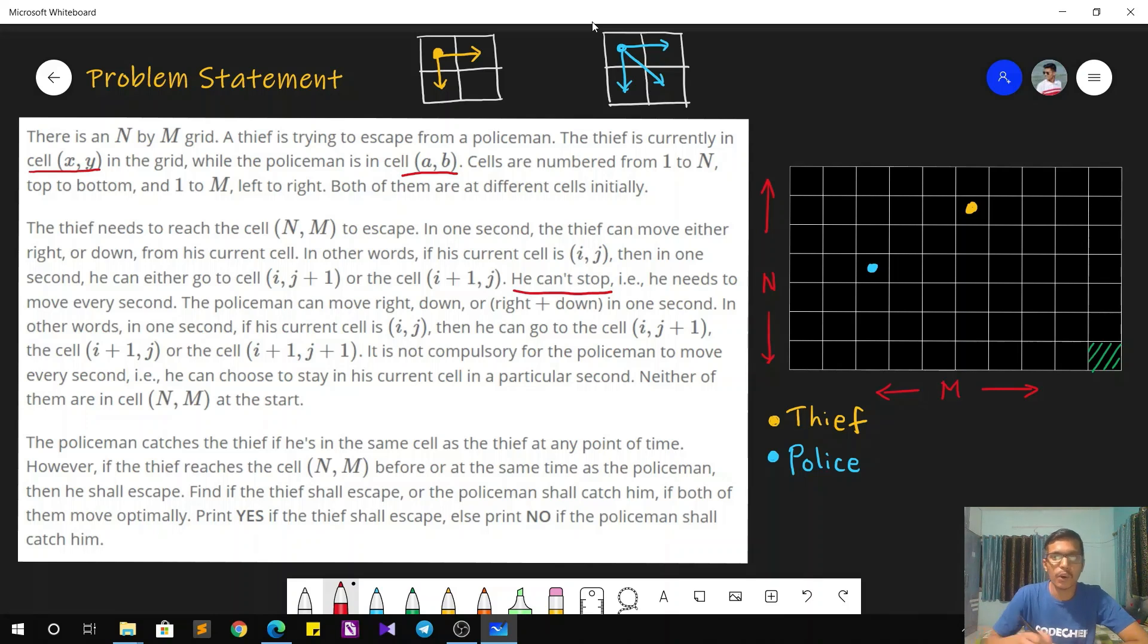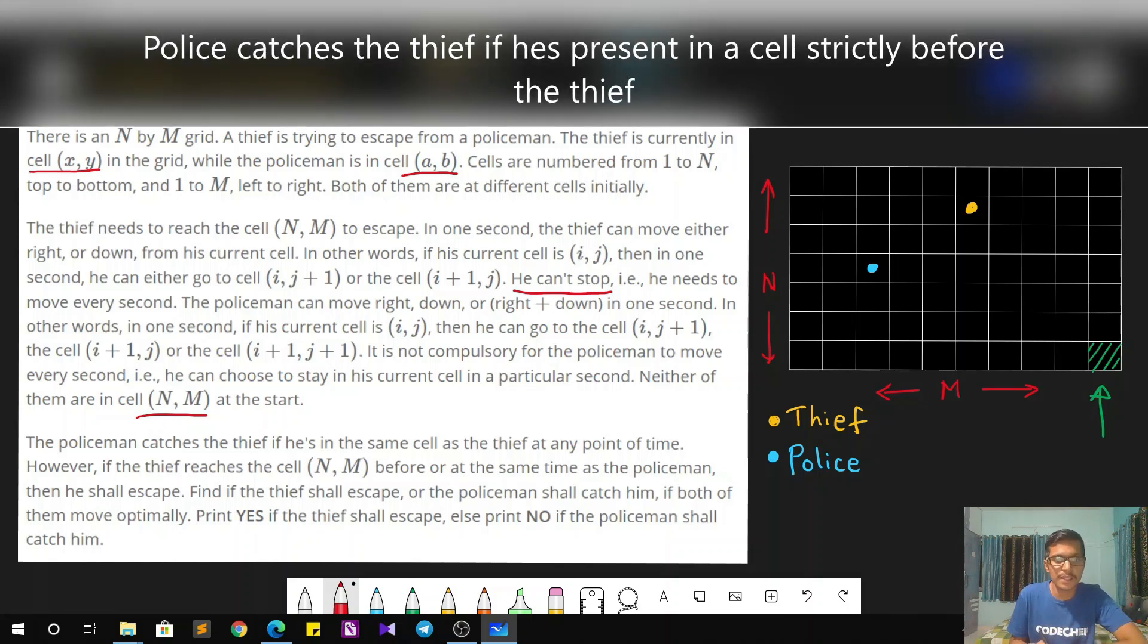The main target of both of them is to reach this cell (N,M), the corner cell marked in green. Wherever they start, both of their targets is to go to this corner cell. Why? Because as soon as the thief reaches this cell, he is going to escape. Now the question is whether the policeman will be able to catch the thief or not. The policeman catches the thief if he is in the same cell as the thief at any point of time.